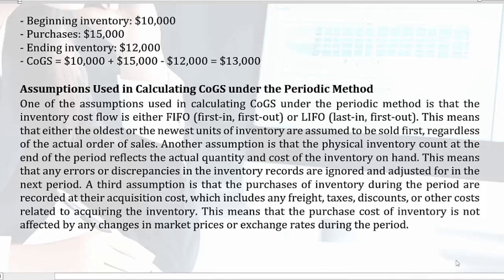Assumptions used in calculating COGS under the periodic method. One assumption is that the inventory cost flow is either FIFO (first in, first out) or LIFO (last in, first out). This means that either the oldest or the newest units of inventory are assumed to be sold first, regardless of the actual order of sales.